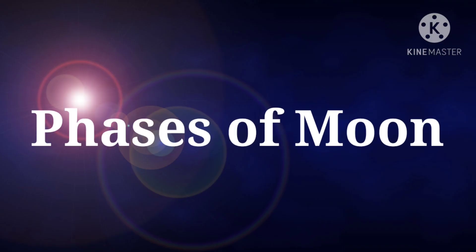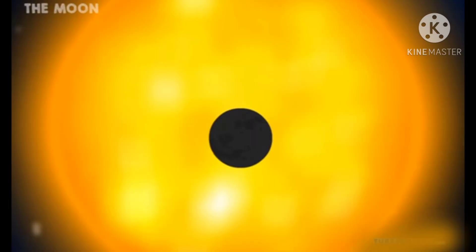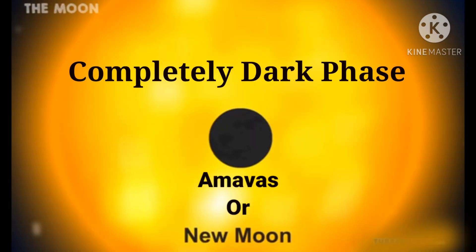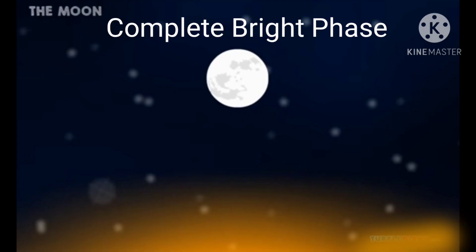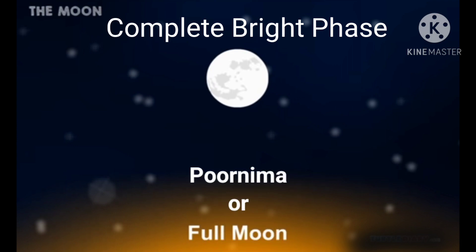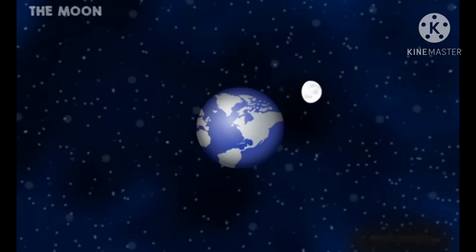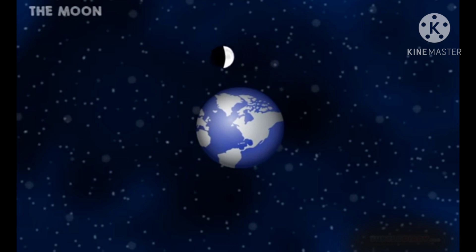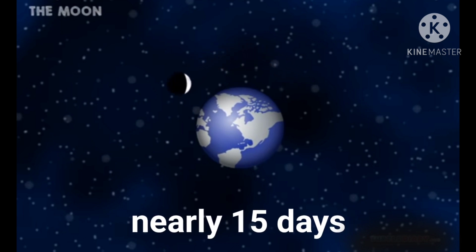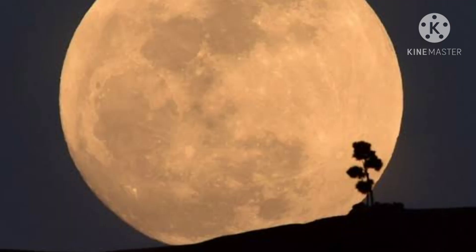These phases include a completely dark phase which is called Amavas or New Moon day, and a completely bright phase called Purnima or Full Moon day. These two phases of the Moon are separated by nearly 15 days. Indians have always been fascinated by the Moon from very ancient times.